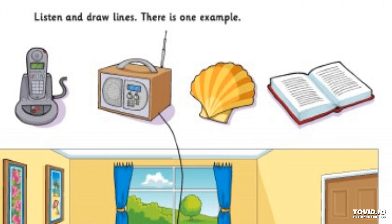One. Put the clock between the two pictures. Pardon? Where do I put the clock? On the wall, between the two pictures. OK. Two. Now put the book under the table. Sorry, put the book where? Put it under the small table. Right. I can do that.